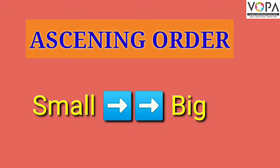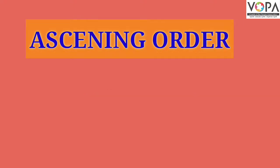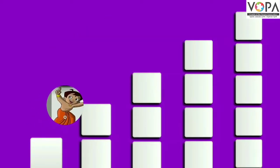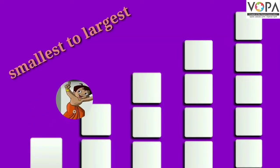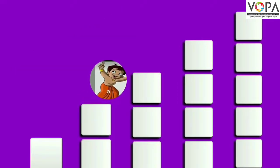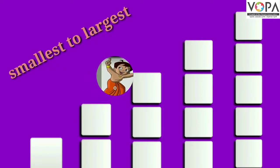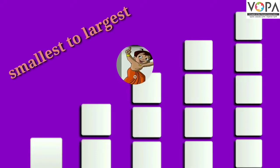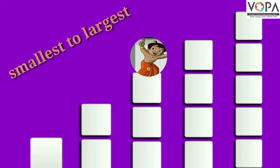Hello dear students, today we are going to learn ascending and descending orders. In math, ascending order means the process of arranging numbers from smallest to largest. The order goes from left to right, so ascending means going up.